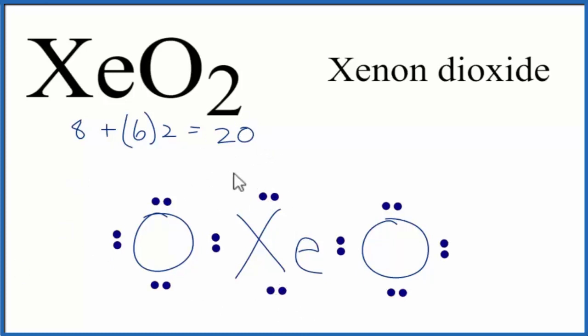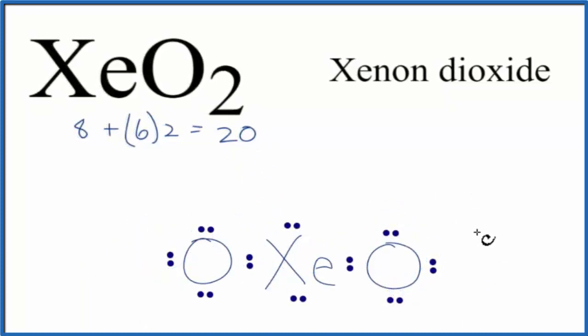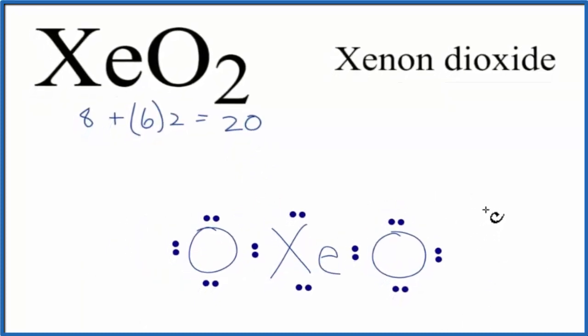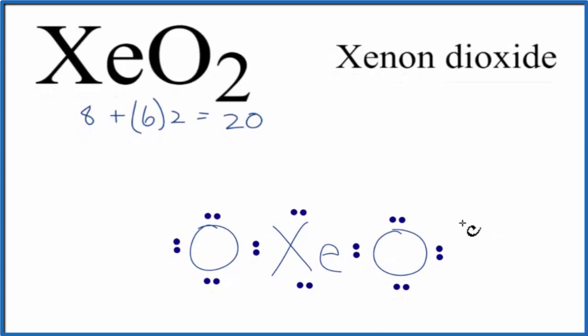And we've used all of our valence electrons, and we have octets for each of the atoms. So this might look like a good Lewis structure. Everything has an octet, and we use 20 valence electrons. But if we check the formal charges,